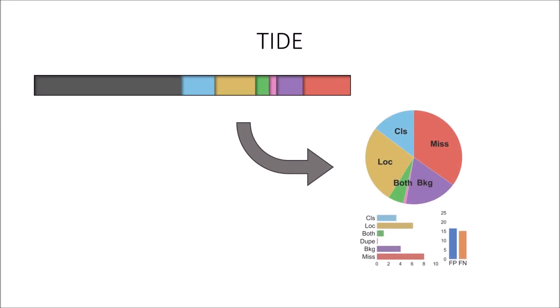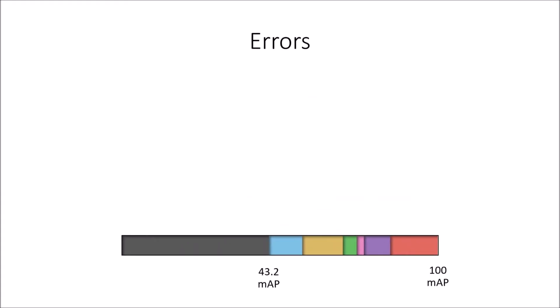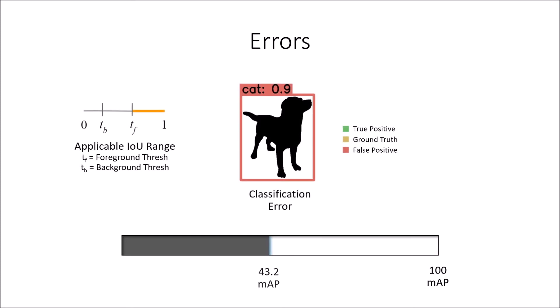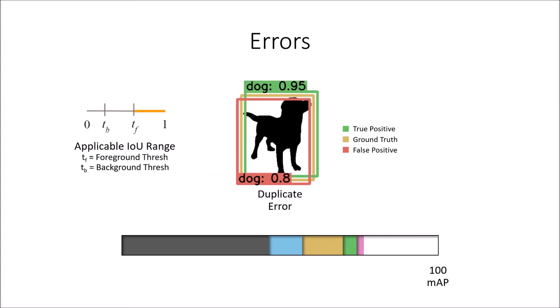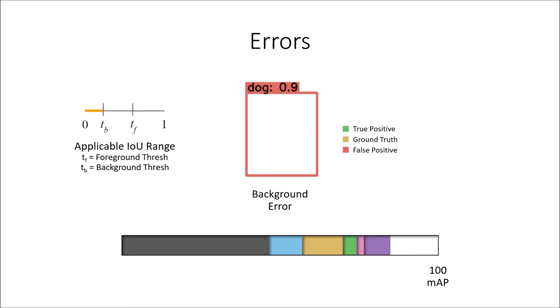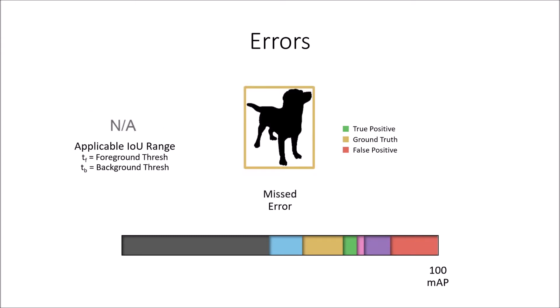When designing TIDE's approach, we carefully considered these issues. To compute our error summary, we first define a set of errors such that fixing all of them would result in 100 MAP. These errors are classification error for when a box fits the ground truth well but is the wrong class, localization error for when a box is the correct class but doesn't fit the ground truth well, both for when the box is both misclassified and mislocalized, duplicate for when two boxes match the same ground truth, background for when a box doesn't overlap with any ground truth, and finally, missed for ground truth the detector completely missed.